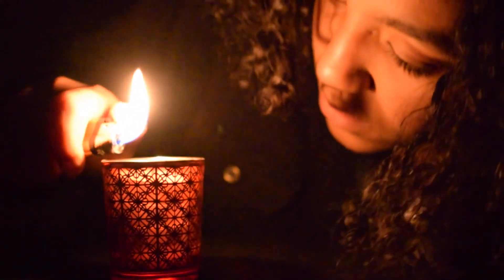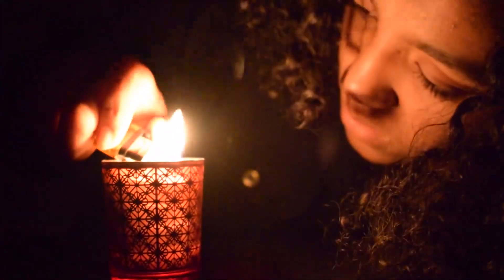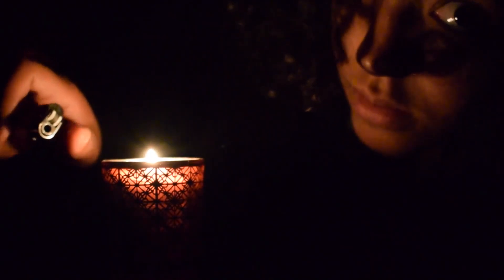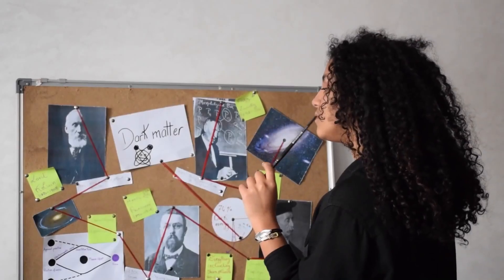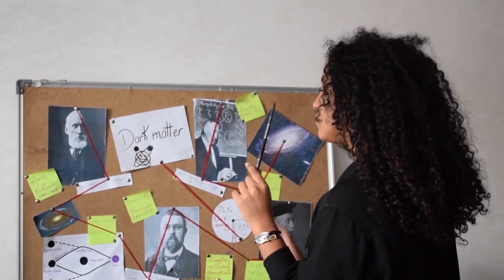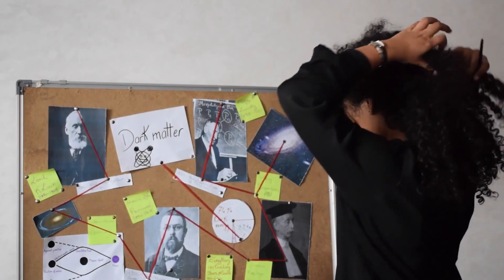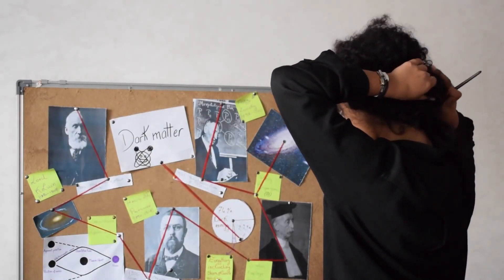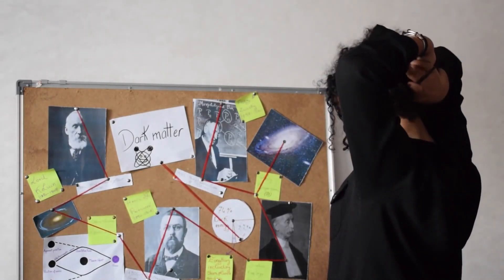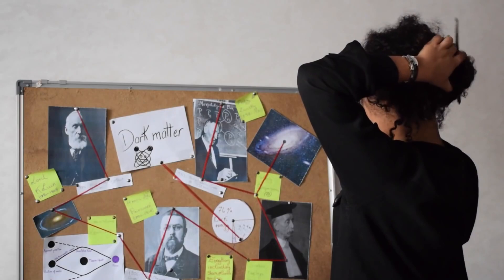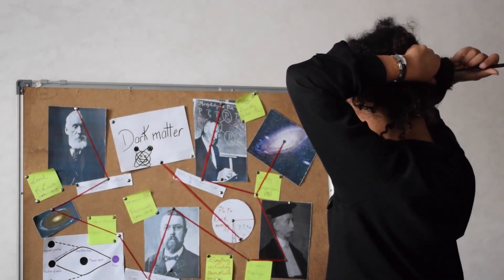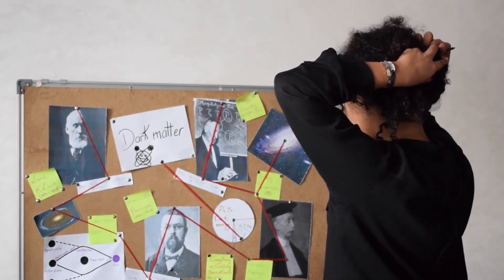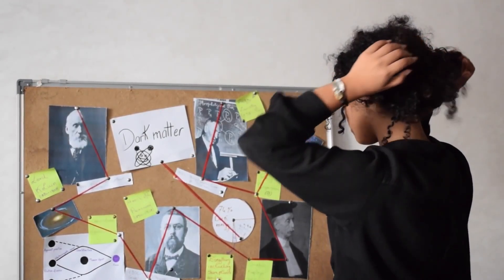Dark Matter. I have been looking for it since 1884, when Lord Kelvin first opened this case by estimating the number of dark bodies in the Milky Way. Through his measurements, he concluded that many of our stars, perhaps a great majority of them, may be dark bodies.